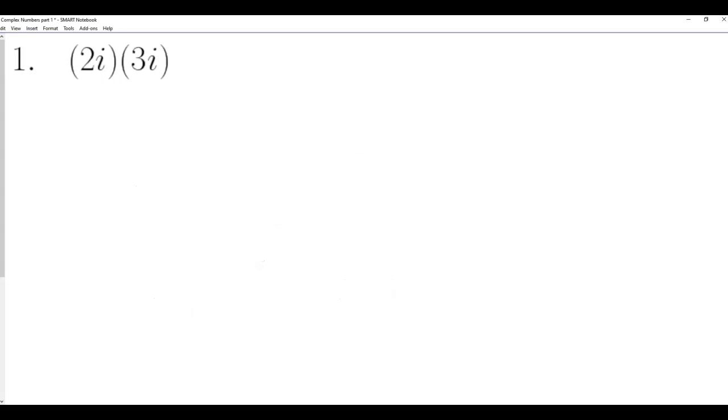Here we go. For example, 2i times 3i equals 6i squared. Since i squared equals negative one, we have 6 times negative one, which equals negative 6.